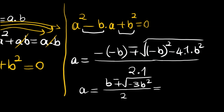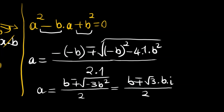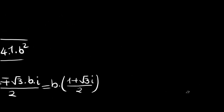This gives b plus or minus the square root of negative 3b squared, all divided by 2. Factoring out b, we can write b times 1 plus or minus the square root of 3 times i, all divided by 2. So the solutions are: